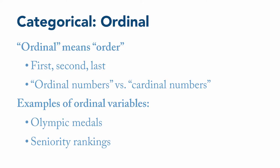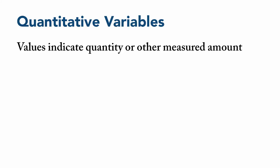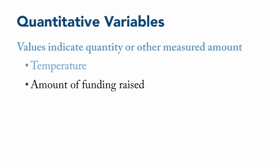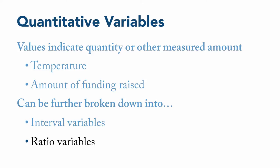The next general group of variables is quantitative variables, where the score indicates the quantity or amount of something that gets measured. Examples include temperature or funding raised. As with categorical variables, it's possible to break down quantitative variables into two smaller groups, interval variables and ratio variables.